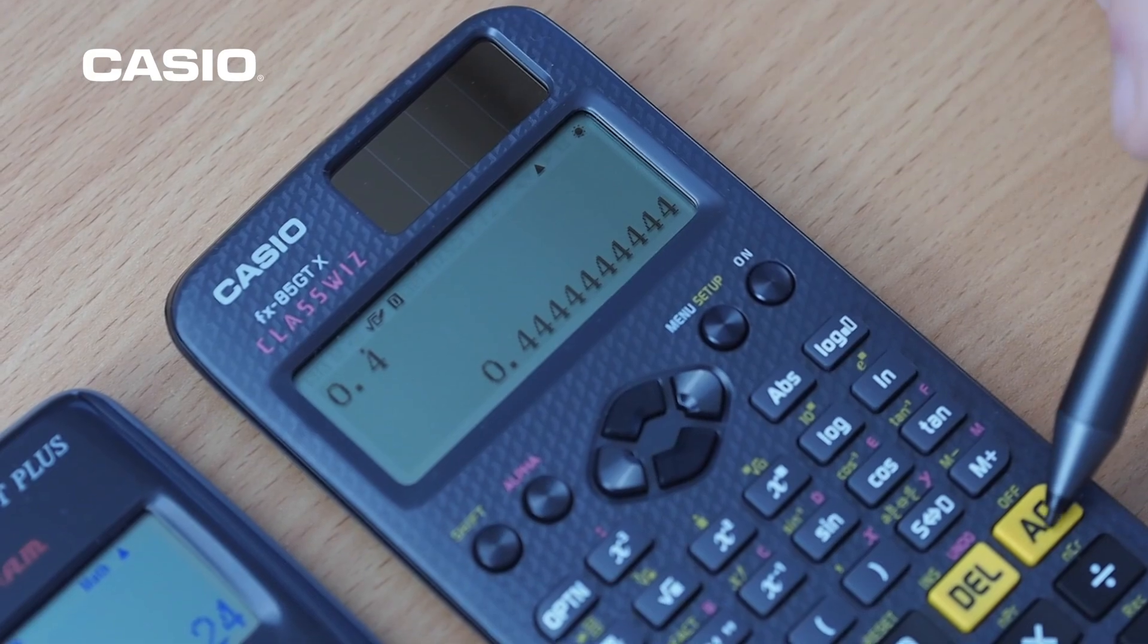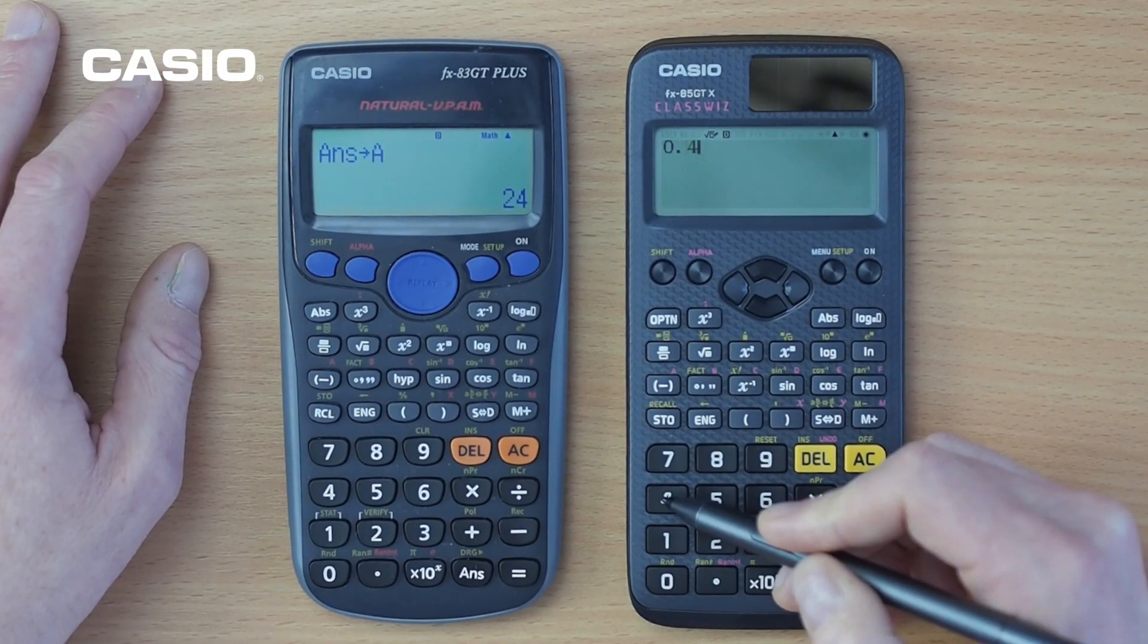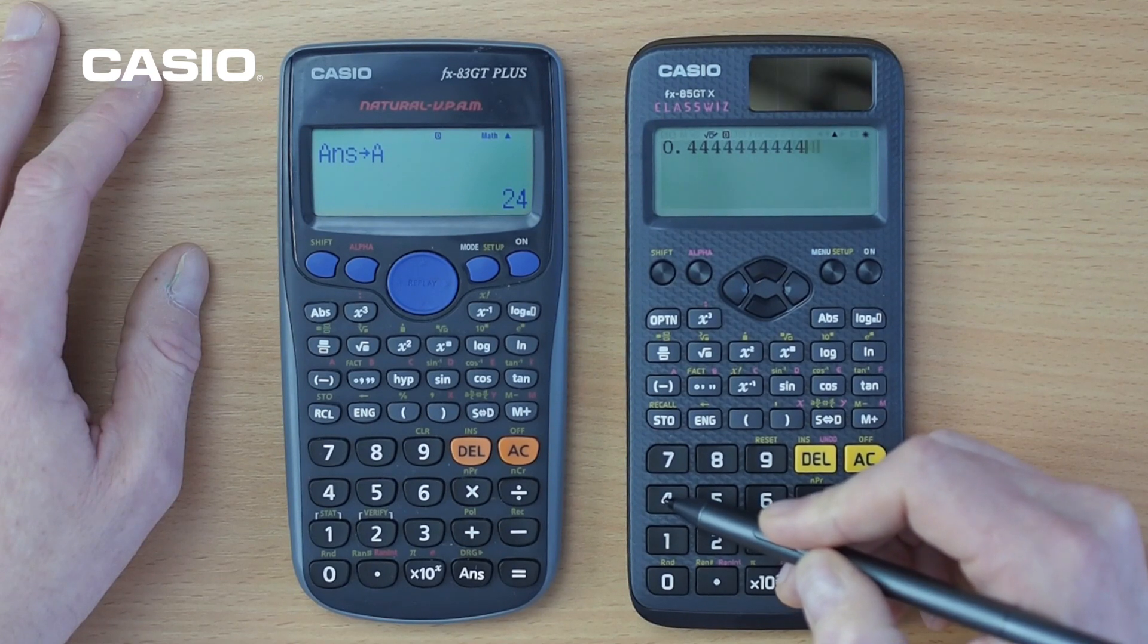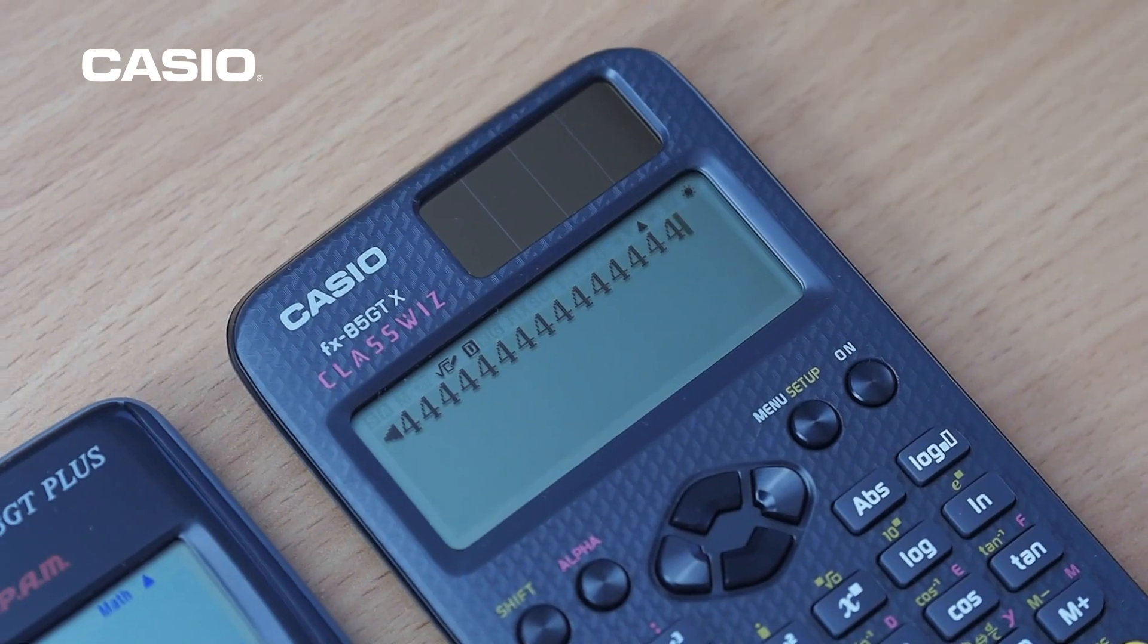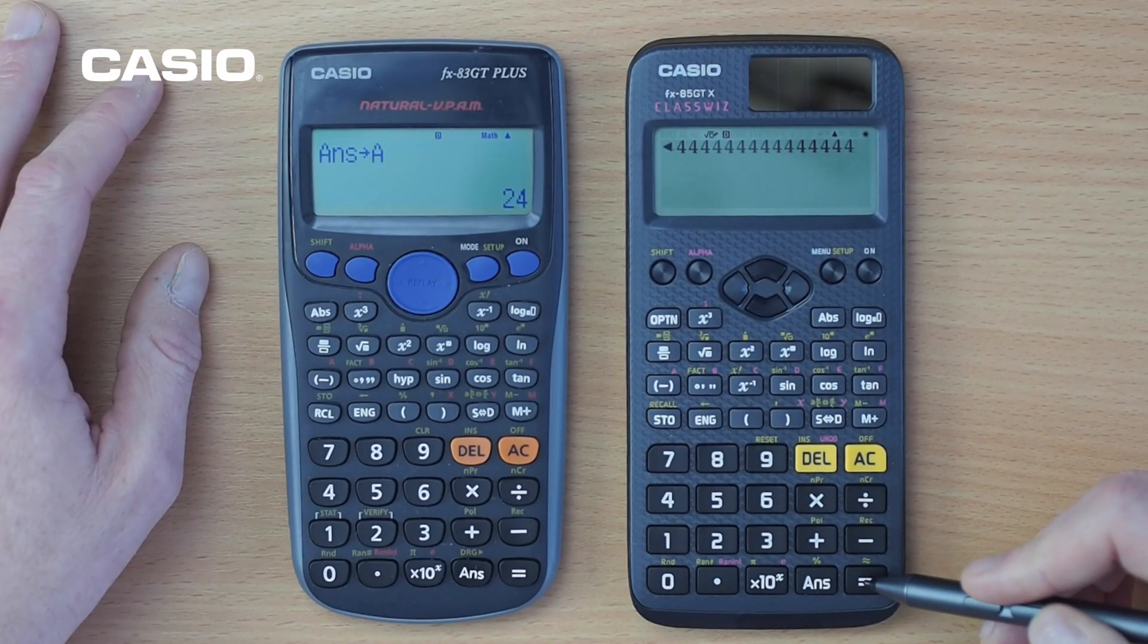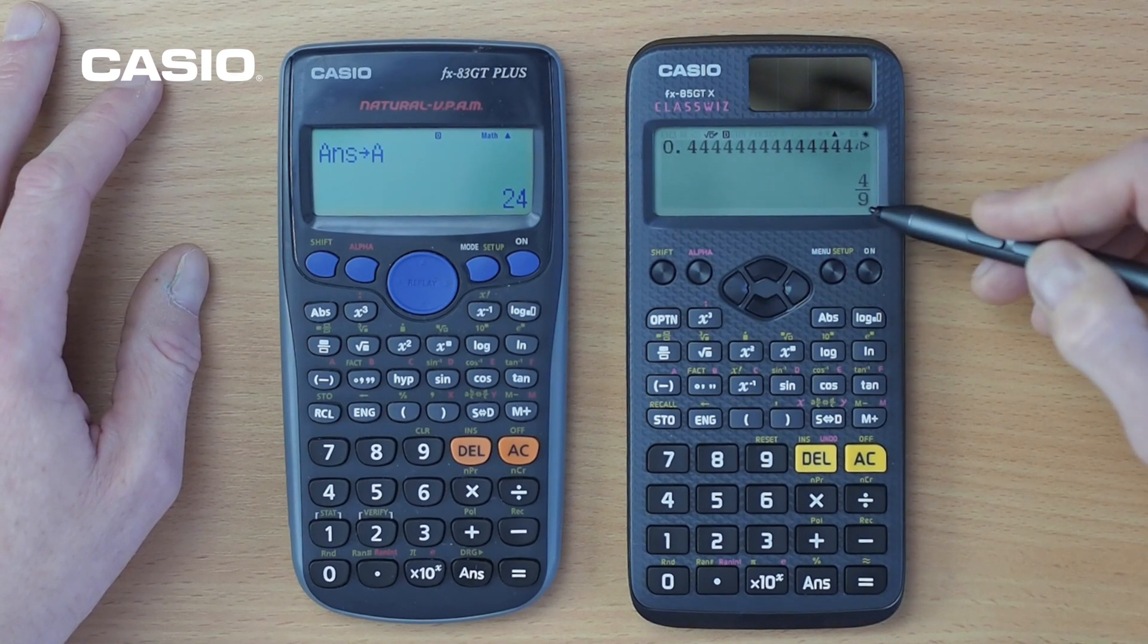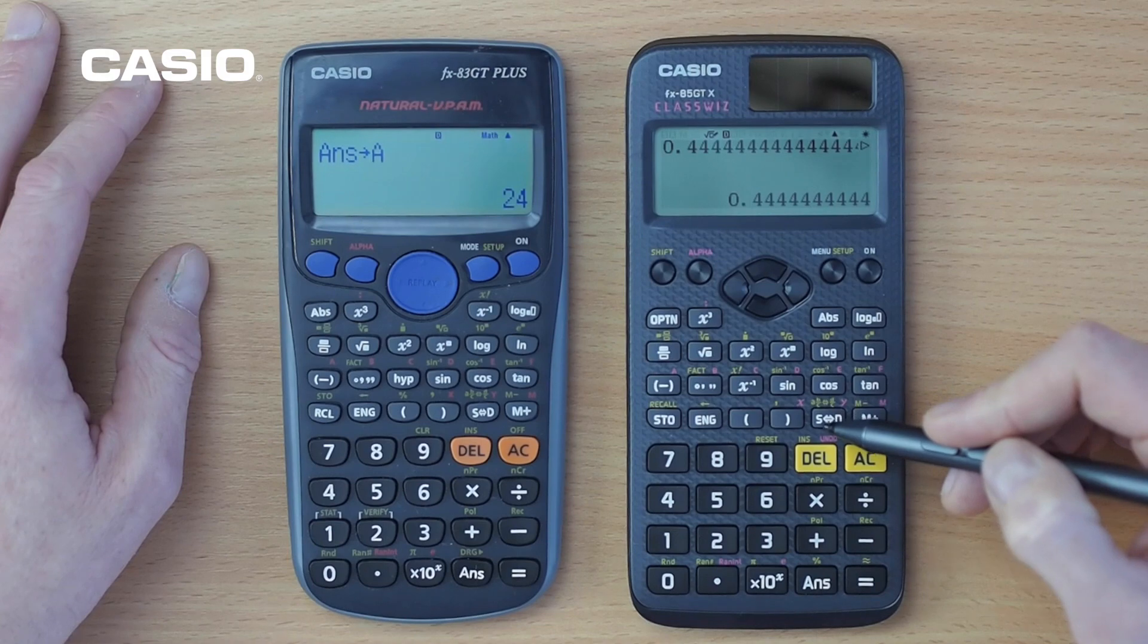Now there is another way to actually enter recurring decimals into a calculator. If we go 0.4 and keep pressing the fours until we get a back arrow on the display here, the calculator is smart enough to assume that we're actually trying to enter in a recurring decimal. Press equals. And there we go as four ninths and we can cycle between the different forms of that recurring decimal.